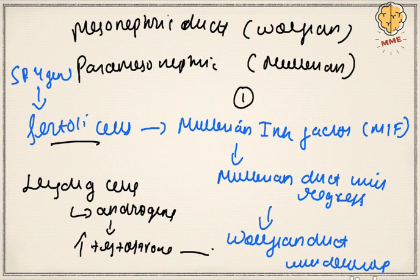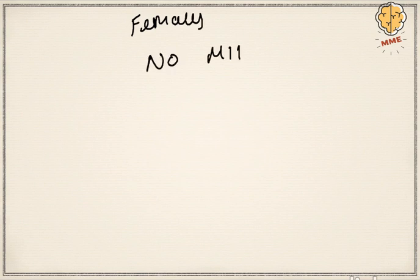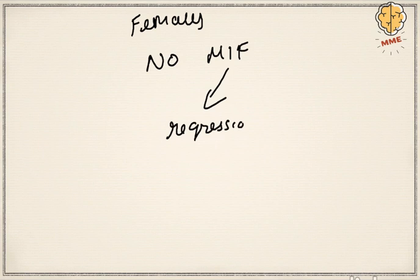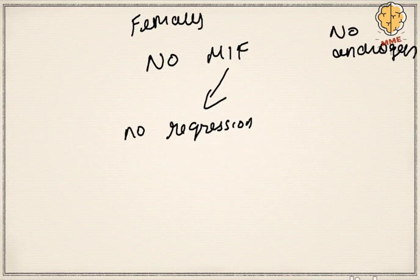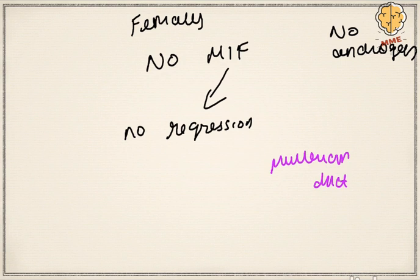In females, there are no Sertoli cells or Leydig cells, so no Müllerian Inhibitory Factor is produced and no regression occurs. There are also no androgens. Therefore, the Müllerian ducts persist and give rise to the female internal genitalia.